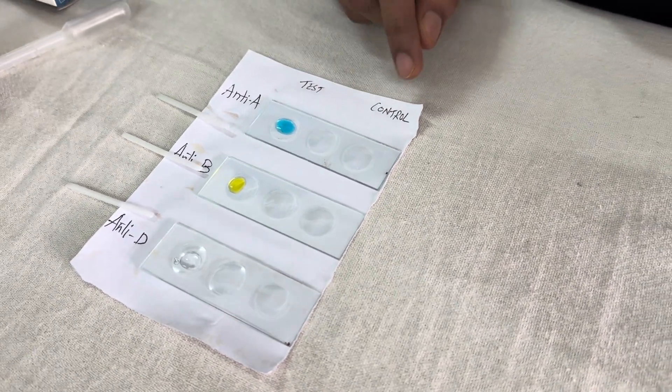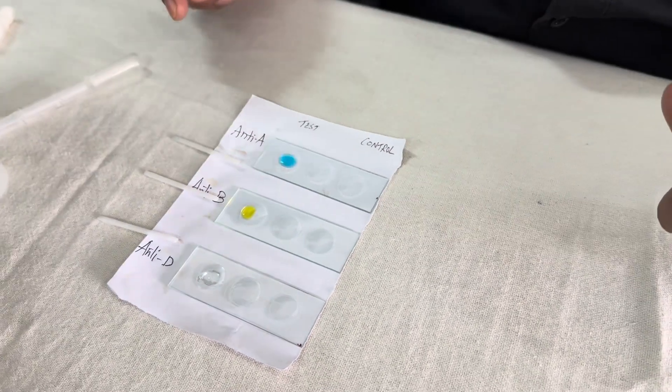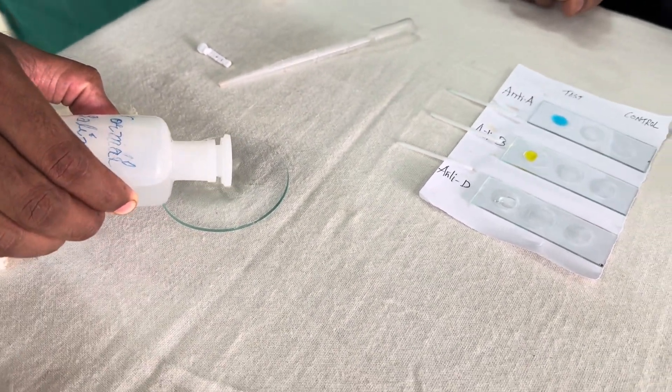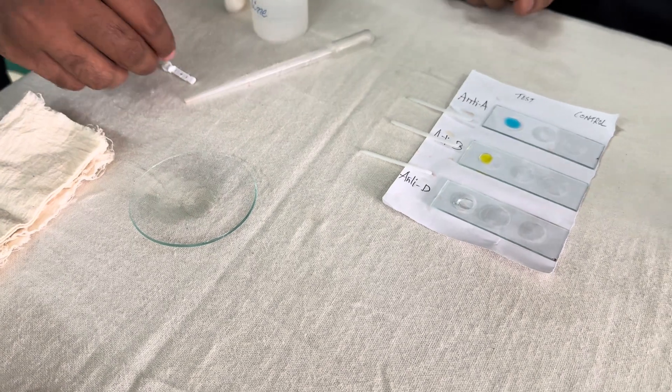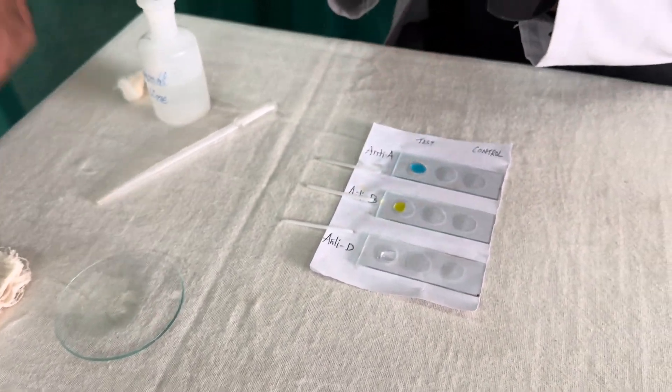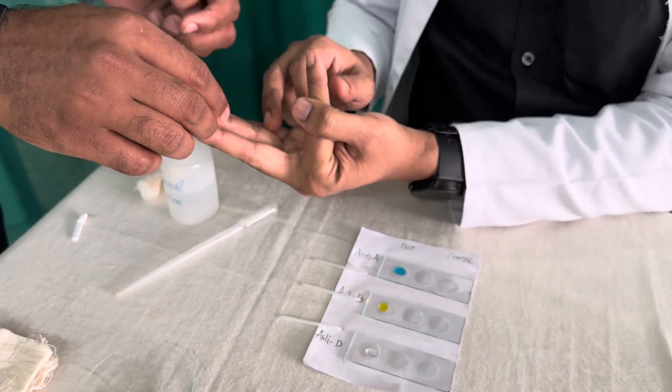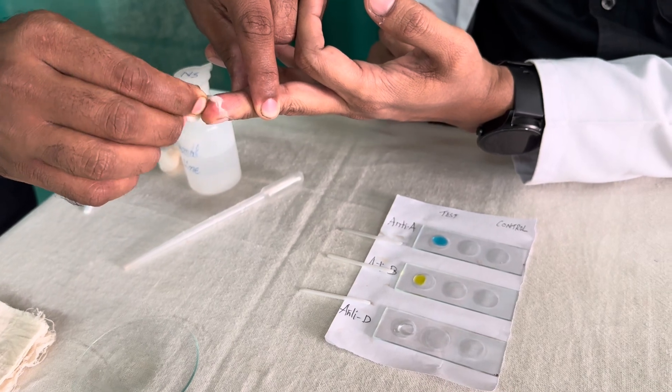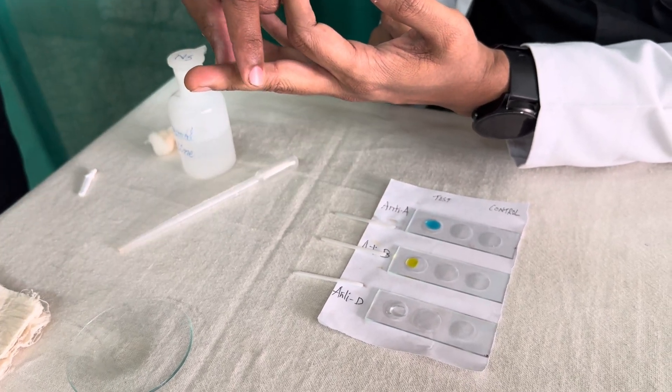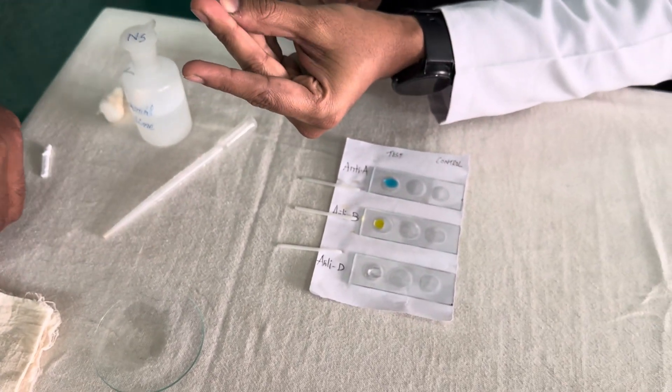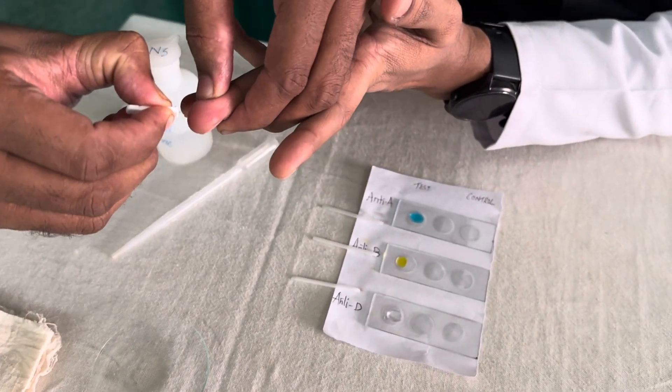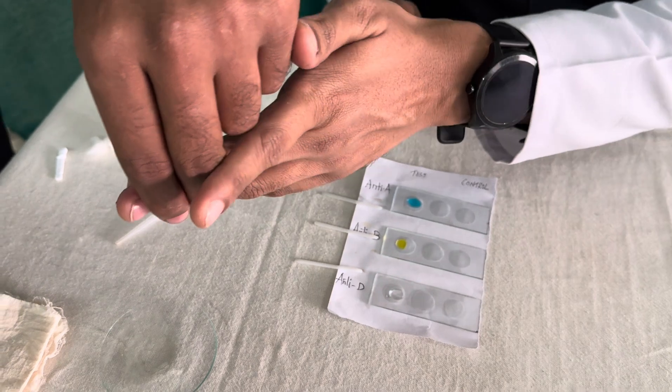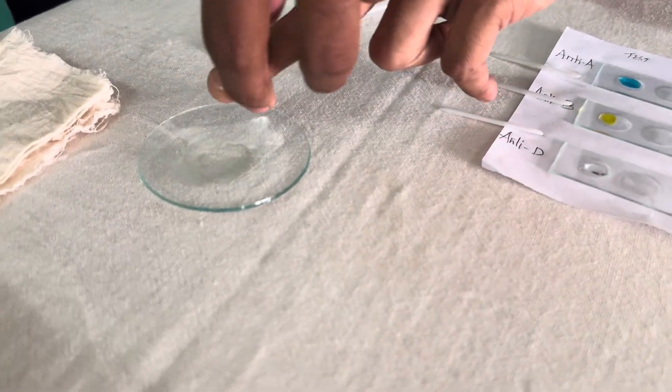This is the test, this is the control. We will put around two to three ml of normal saline in the watch glass, test tube, or porcelain dish, whichever is available. Then with aseptic precautions, with the help of the lancet, we prick the ring finger or middle finger. With one prick, collect the blood. You have to discard the first drop because it contains tissue fluids. Then put one or two drops in this normal saline.